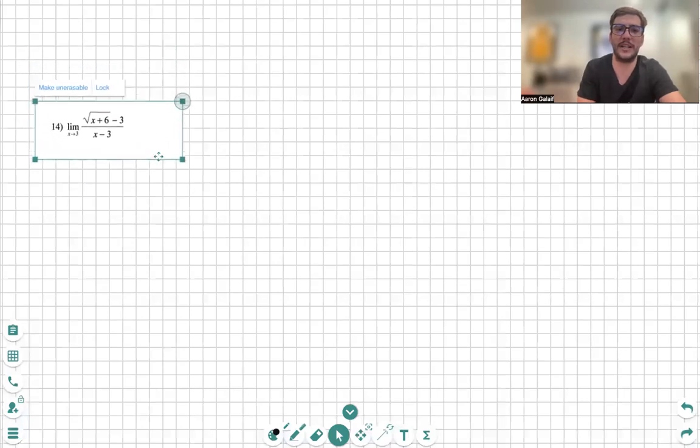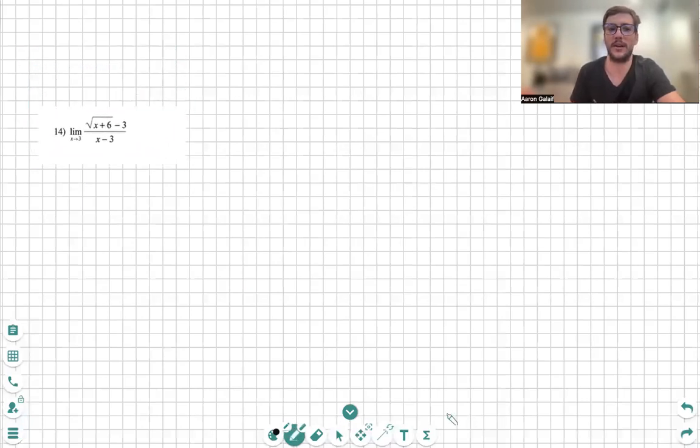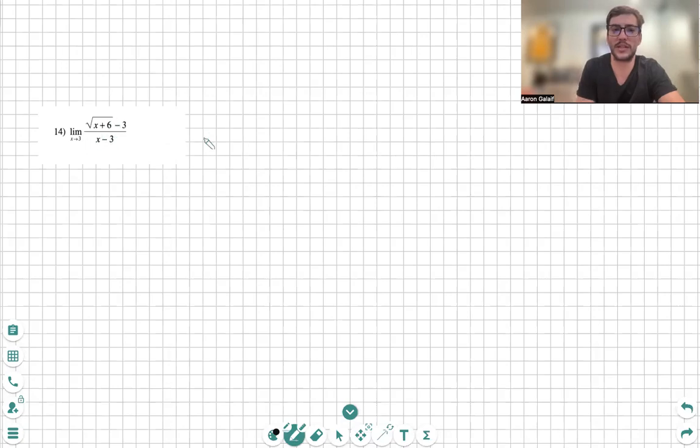When we are finding the limits, we need to be very careful. When we start going over this equation, we notice that when I plug in 3 for x, we get what is called a 0 on the denominator and a 0 on the numerator.